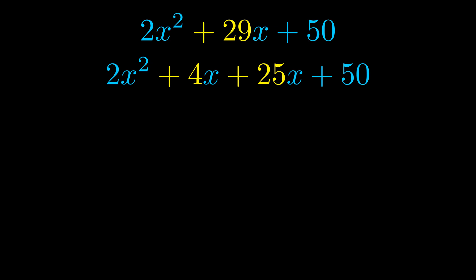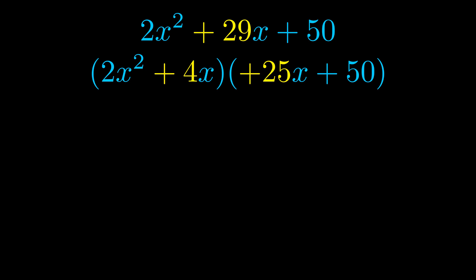Once we've done this we go ahead and put parentheses around the first term and the last term. And we do that so that we can take the greatest common factor out of both terms.